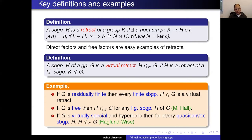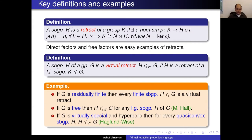About ten years ago, Haglund and Wise introduced the class of virtually special groups, related to fundamental groups of CAT(0) cube complexes with certain nice properties. They proved that if you have a quasi-convex subgroup of a virtually special hyperbolic group, then it's a virtual retract — and this is important for many applications. So these three examples really show there are many more virtual retracts than retracts.